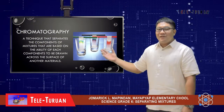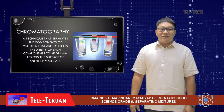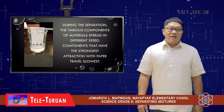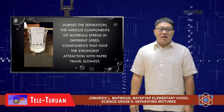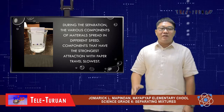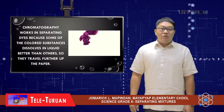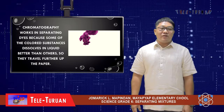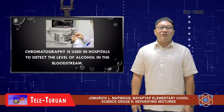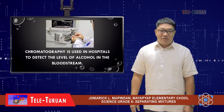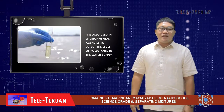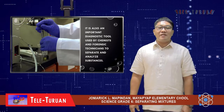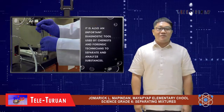Chromatography is a technique that separates the components of mixtures based on the ability of each component to be drawn across the surface of another material. During the separation, the various components spread at different speeds — components with the strongest attraction to the paper travel slowest. Chromatography works in separating dyes because some colored substances dissolve in liquid better than others, so they travel further up the paper. It is used in hospitals to detect the level of alcohol in the bloodstream, and in environmental agencies to detect the level of pollutants in the water supply. It is also an important diagnostic tool used by chemists and forensic technicians to separate and analyze substances.